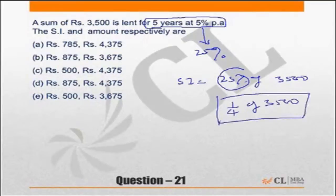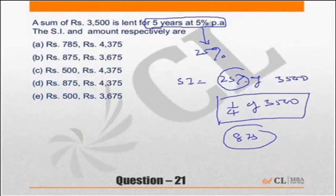Half of 3500 is 1750. Half of 1750 will be 875. So the simple interest is 875. That eliminates choice P, choice A, and choice E — three of them are incorrect.